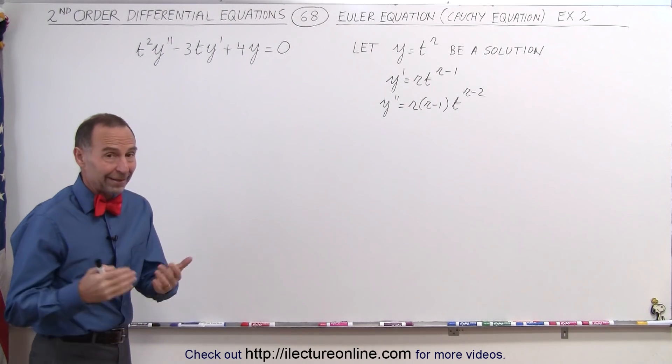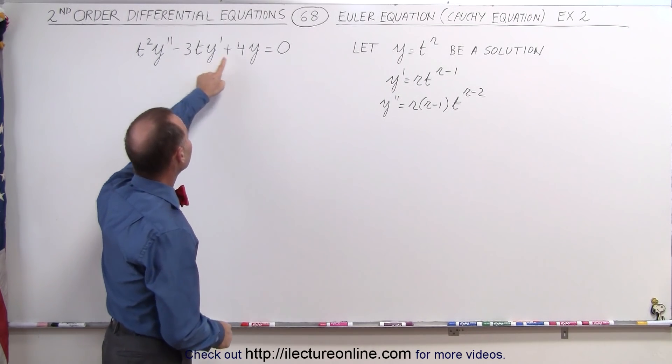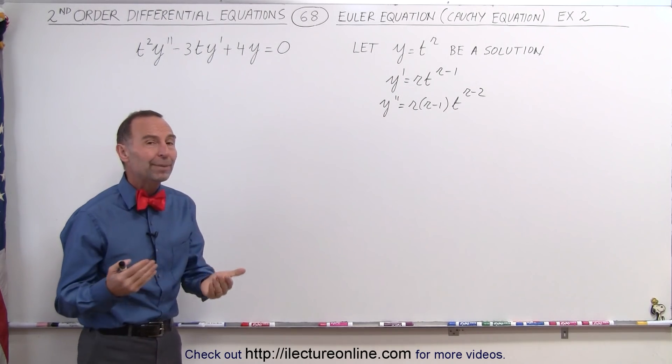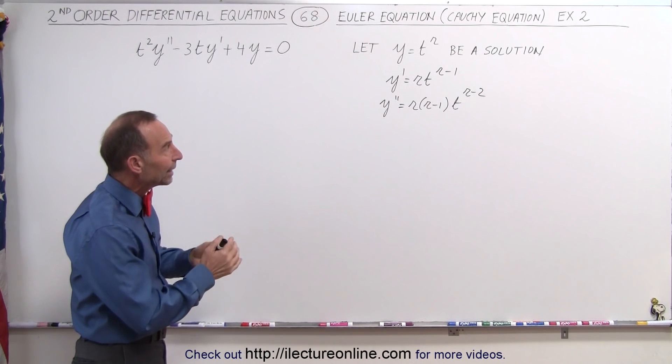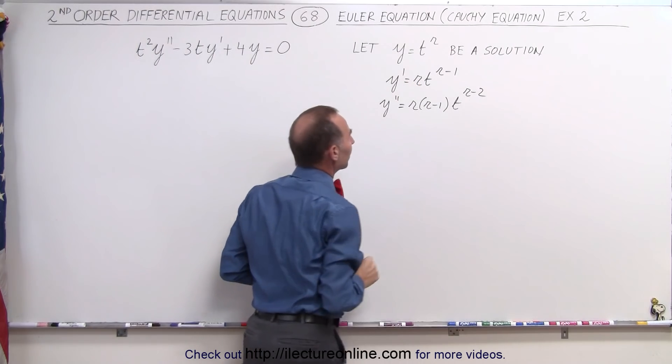If the coefficients, not being constant, are in the form of t squared, t, and t to the zero power, then we know it to be the Euler equation, and we know that the general solution will have this format: y equals t to the r power.